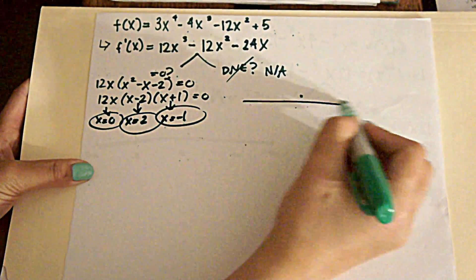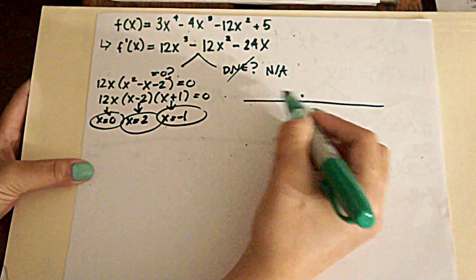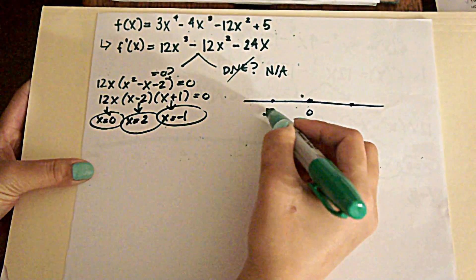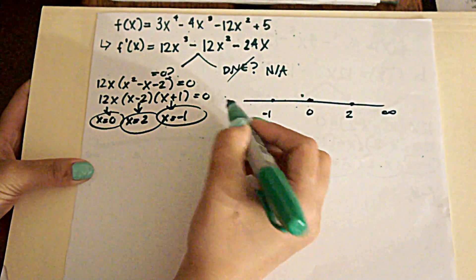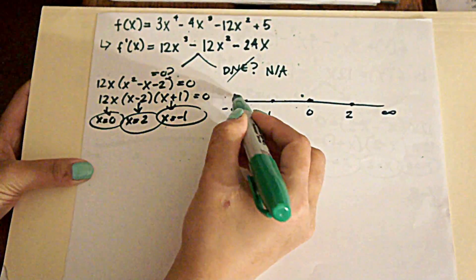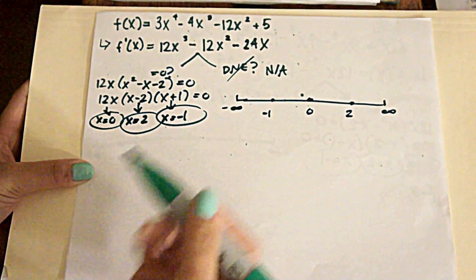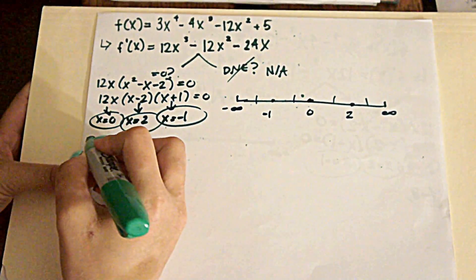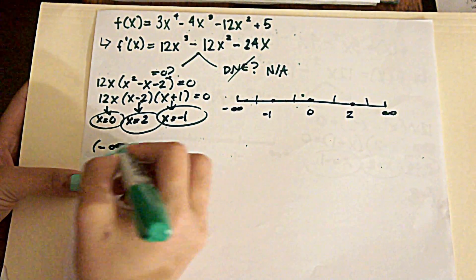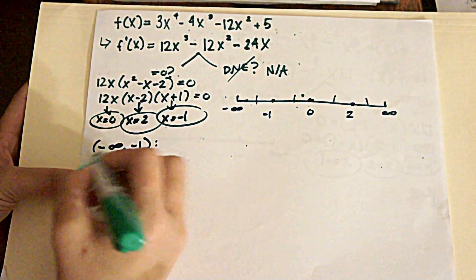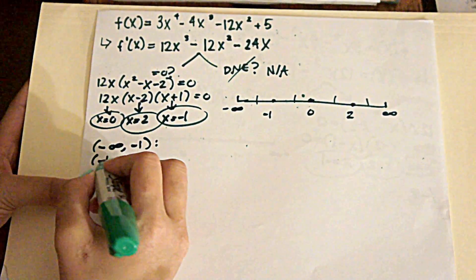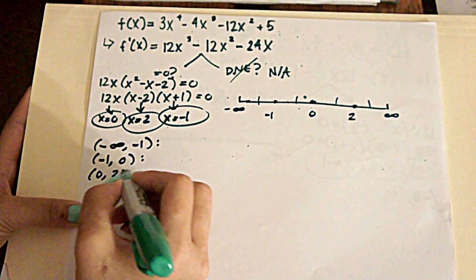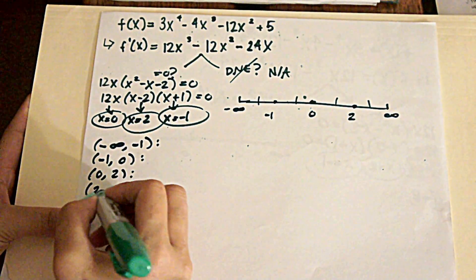The next thing we want to do is plot our points on our number line. 0, negative 1, and 2. Infinity and negative infinity would be over here. And the first thing we want to do is find numbers between our intervals. Our first interval is negative infinity to negative 1. Our next interval would be negative 1 to 0. Third interval would be 0 to 2. And our fourth interval would be 2 to infinity.